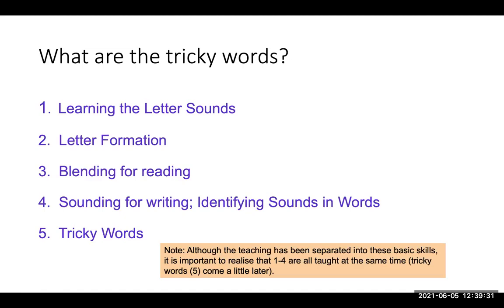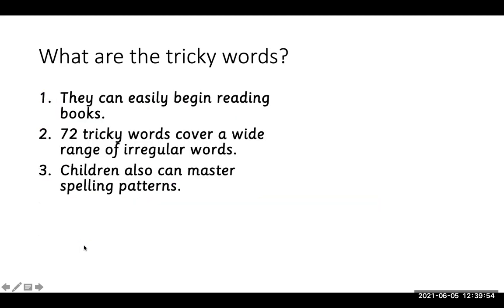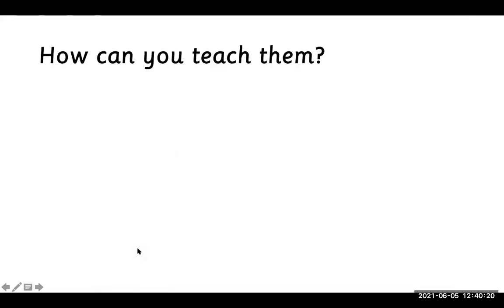Tricky words come at the bottom of the list — the fifth skill of the Jolly Phonics program. Skills one through four are all taught at the same time and can be used in a single lesson, but tricky words come a little later. These 72 tricky words cover a wide range of irregular words, and children can also master spelling patterns through them. The tricky words make reading easier and you can find them in all of the readers.